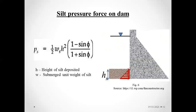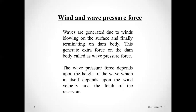Coming to the silt pressure force on the dam: the deposition of silt is a continuous process. The silt deposited at the sides over time is considered and it is basically the active earth pressure. The force due to the pressure of silt is given by: Fs = ½ × γs_sub × h² × (1 − sin φ) / (1 + sin φ), where this expression is Rankine's active earth pressure coefficient Ka and φ is the angle of internal friction.